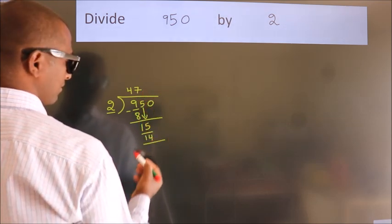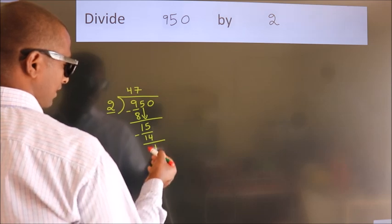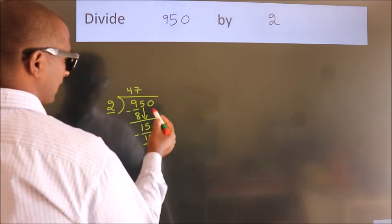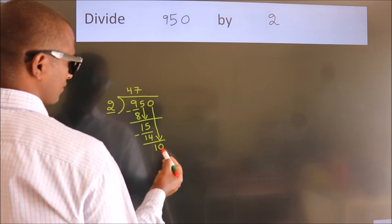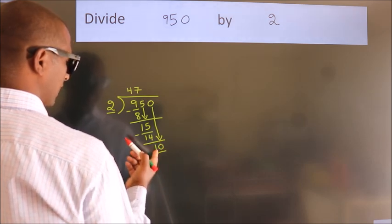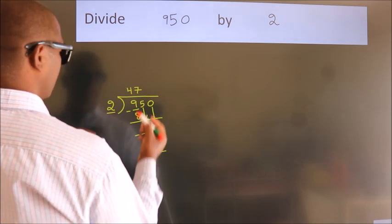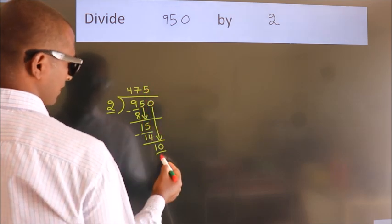Now we subtract. We get 1. After this, bring down the beside number. So 0 down, so 10. When do we get 10? In 2 table, 2 fives, 10.